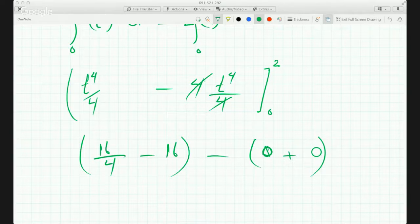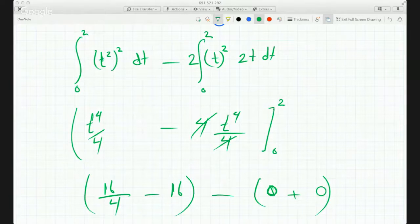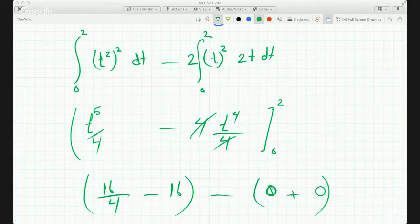So we would get... oh wait, I per minute made a mistake here. This is t to the 4 becomes t to the 5 over 5, because this here will become t to the 4, and this here will become t cubed.